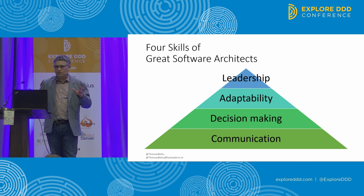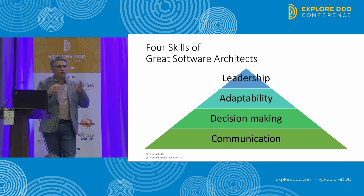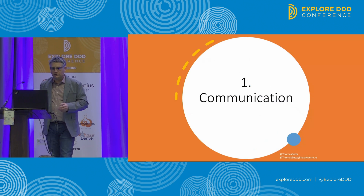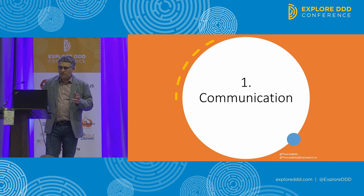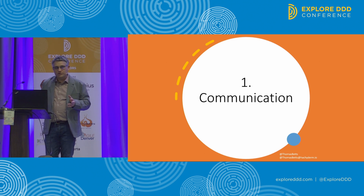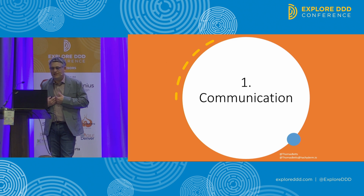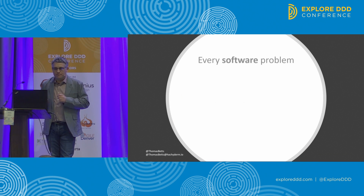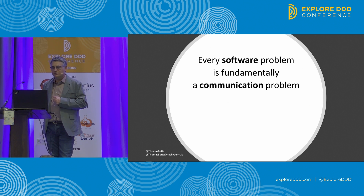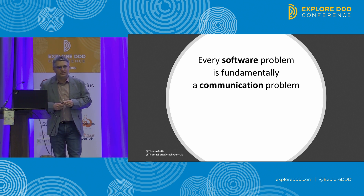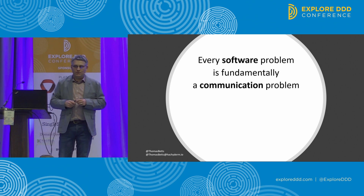All four of those are important, and on any given day you might leverage one more than the other, but this is the base rank. The number one most important skill for an architect is communication. Why? Because every software problem is fundamentally a communication problem.